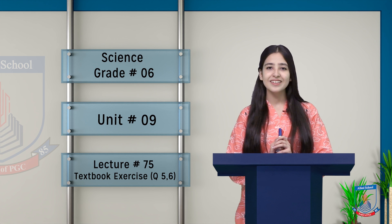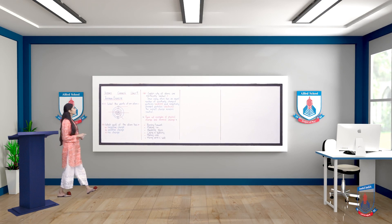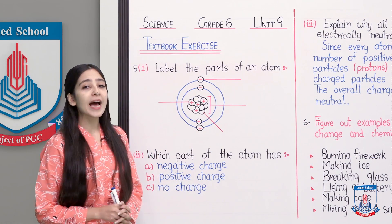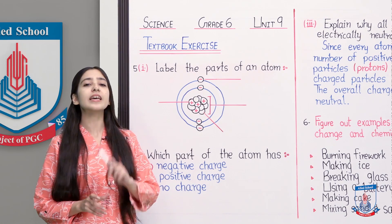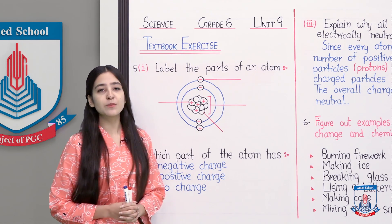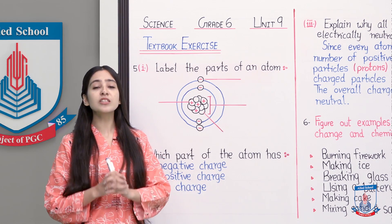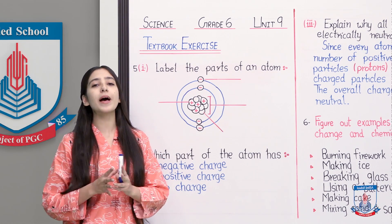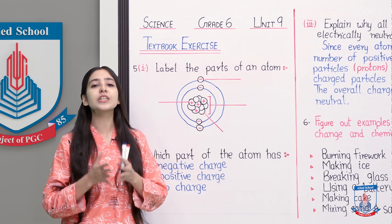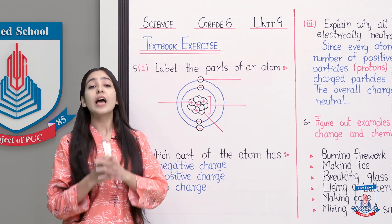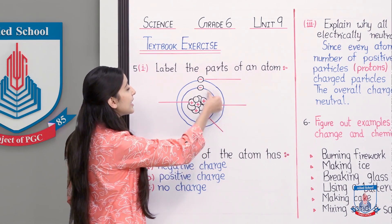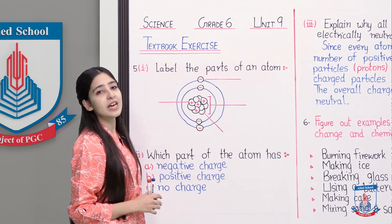So let us begin with question number five. In question number five, you have been given a diagram and you have been asked to label it. This diagram is of an atom. The atom is the smallest unit found in the universe. These atoms combine to form different elements and compounds. You have been given the structure of an atom and we have to explain what these labels indicate.